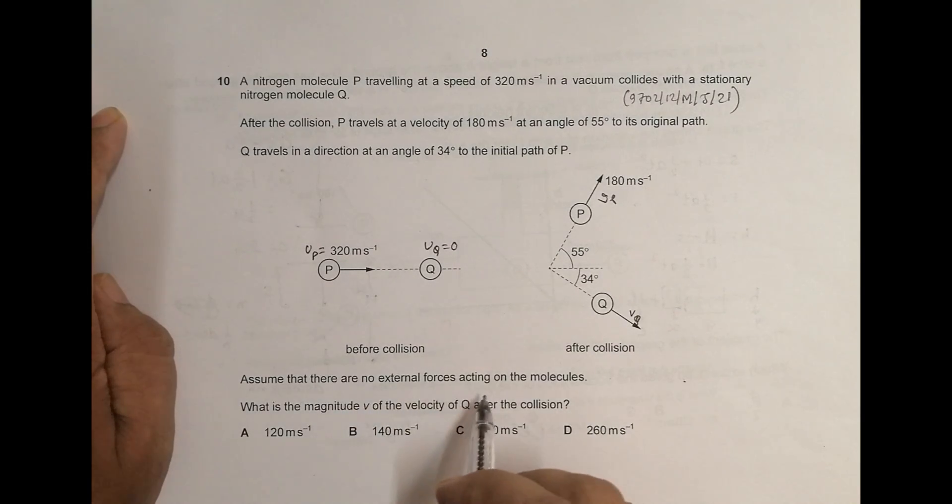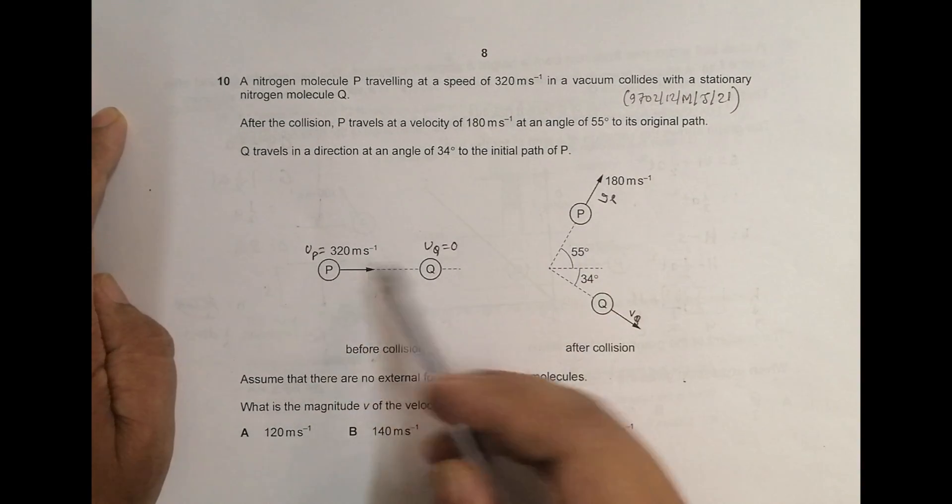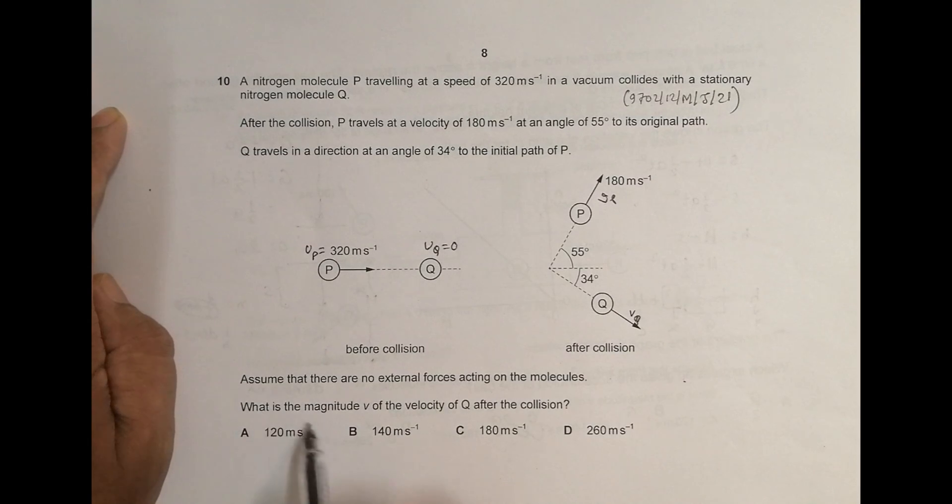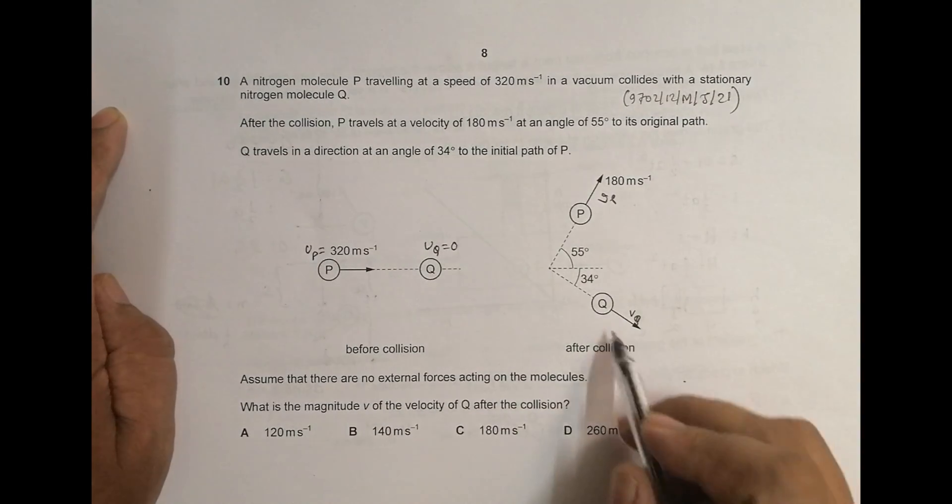Assume that there are no external forces acting on the molecule. So the only force is between them and no other forces. What is the magnitude V of the velocity of Q after the collision? So we have to find the value of this V Q.